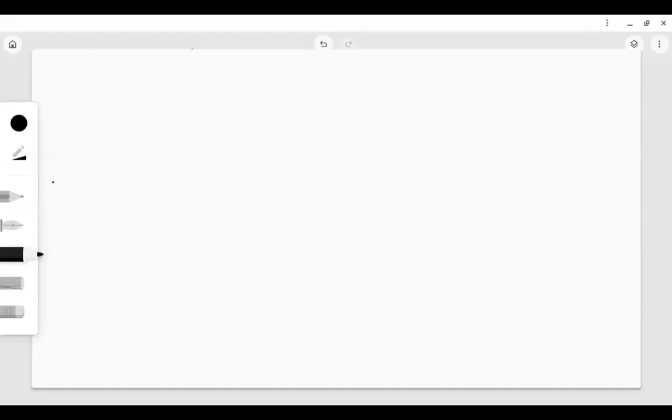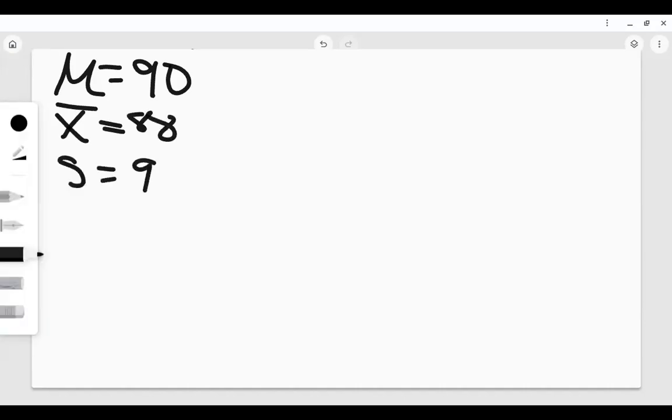Okay, so I apologize ahead of time. My handwriting is messy. But let's say that the mu here is 90. We just established that the X bar is 88. Our standard deviation was 9. And our sample size is 28. So let's put that into our equation.